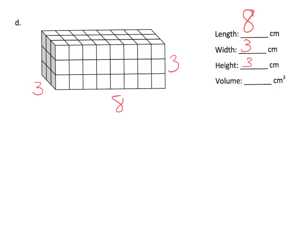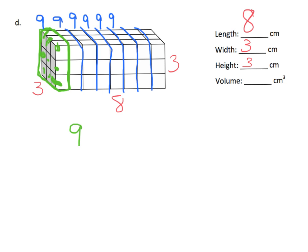Before we go finding a rule, let's think about this one like a loaf of bread. We might cut our loaf of bread right here and then count the number of cubes in that one slice of bread. So we've got 1, 2, 3, 4, 5, 6, 7, 8, 9 — so 9 in that slice of bread. Now let's count how many slices we have: there are 8 slices, with 9 cubes in each. So that's 9 times 8, which is 72.